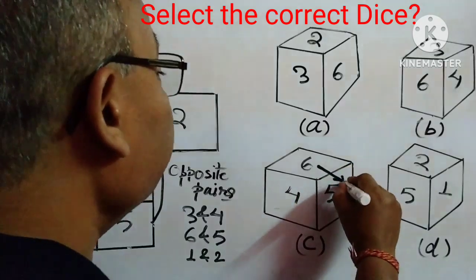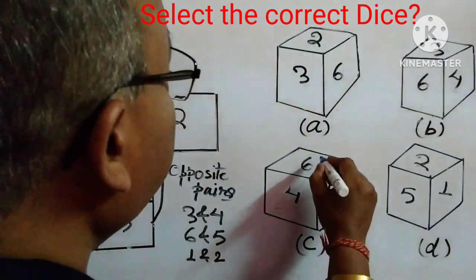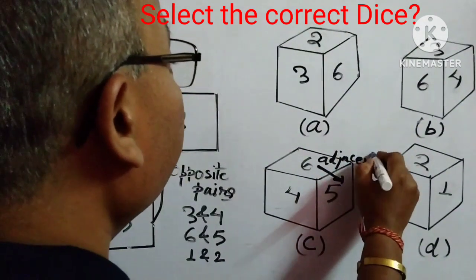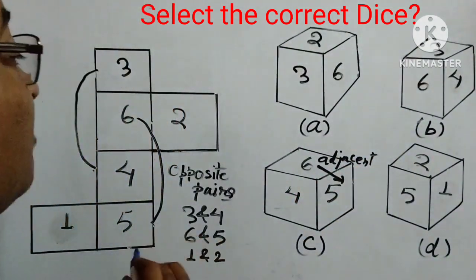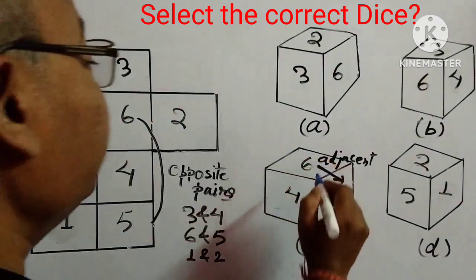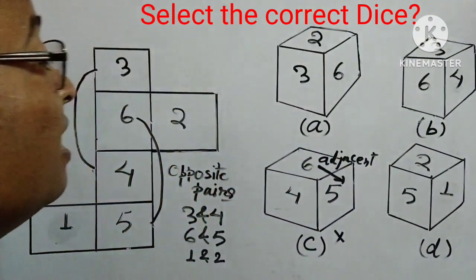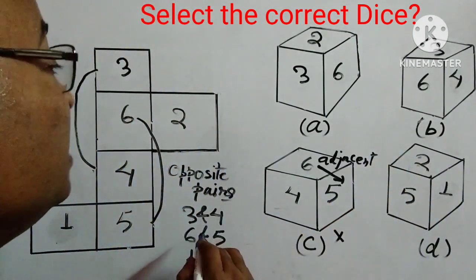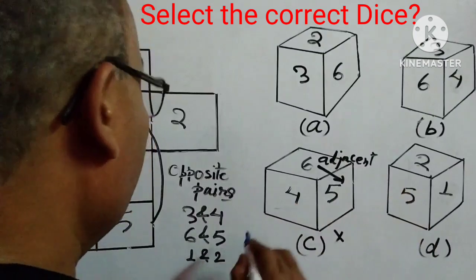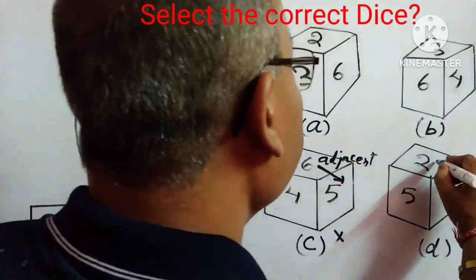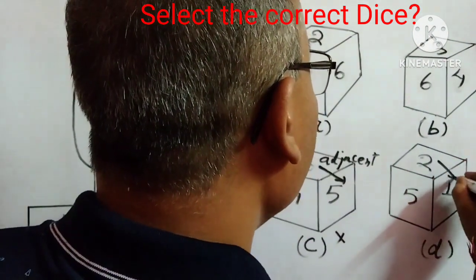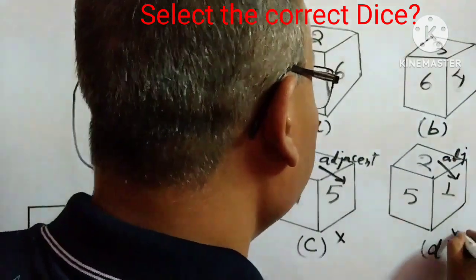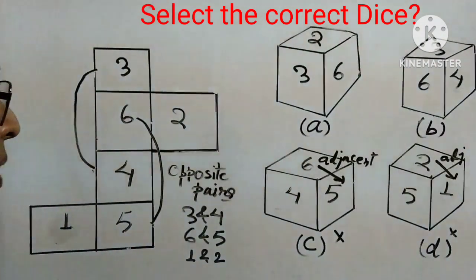6 and 5 are adjacent to each other. So it should be opposite. 6 and 5 should be opposite, so this is adjacent, so this cannot be the answer, okay. Now, come over here, 5, 2 and 1, see, 1 and 2 should be opposite, again same thing, 1 and 2 is given adjacent, so this one also, it won't be.